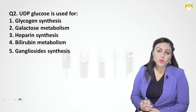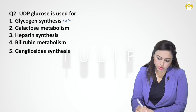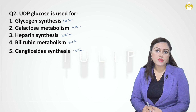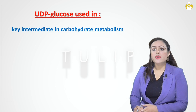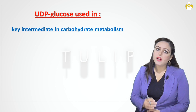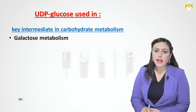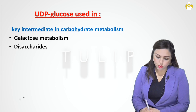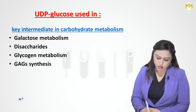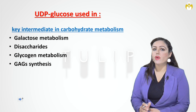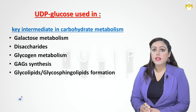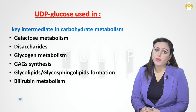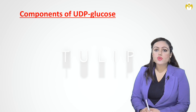The next question: UDP glucose is used in glycogen synthesis, galactose metabolism, heparin synthesis, bilirubin metabolism, and ganglioside synthesis — the answer is all of the above. UDP glucose is the key intermediate in carbohydrate metabolism, used in galactose metabolism, disaccharide formation (sucrose, lactose), glycogen metabolism, GAG synthesis (glycosaminoglycans), and glycolipid/ganglioside/cerebroside formation requiring UDP glucose and UDP galactose.